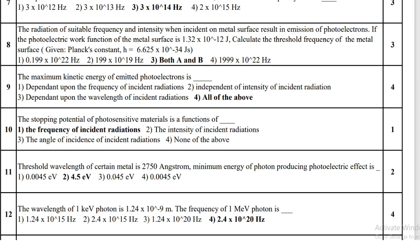When radiation of suitable frequency and intensity is incident on a metal surface, it results in emission of photoelectrons. If the photoelectric work function of the metal surface is 1.32 × 10⁻¹² joule, the threshold frequency is 1.199 × 10²² hertz and 199 × 10¹⁹ hertz — that means both A and B.